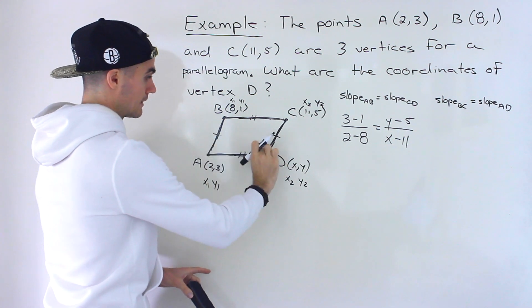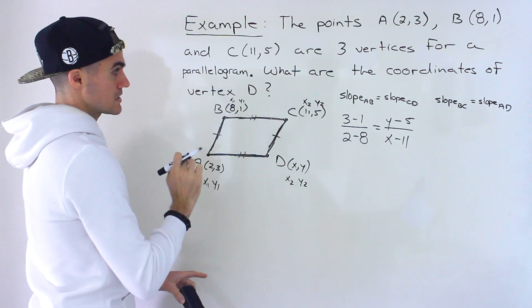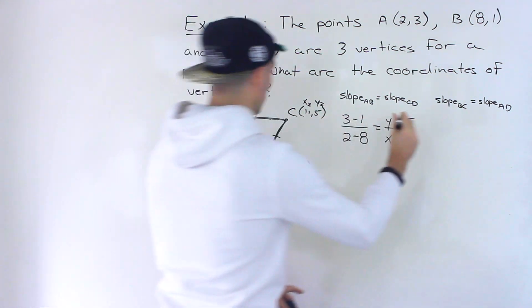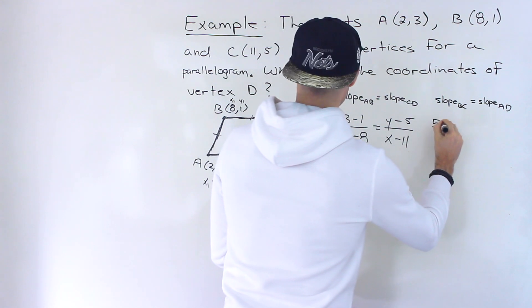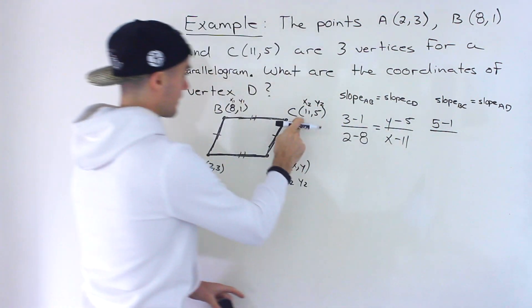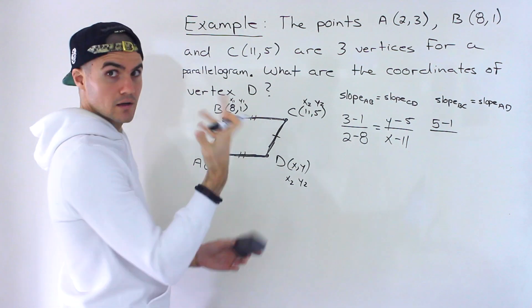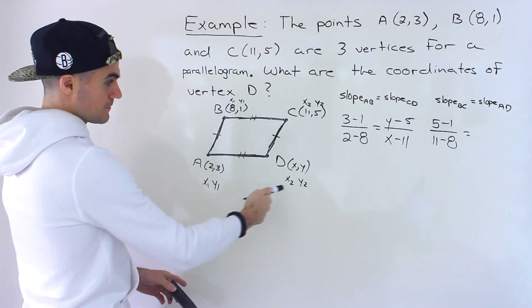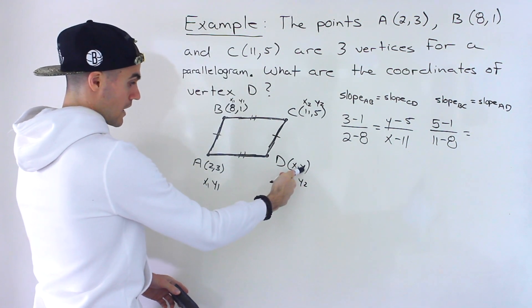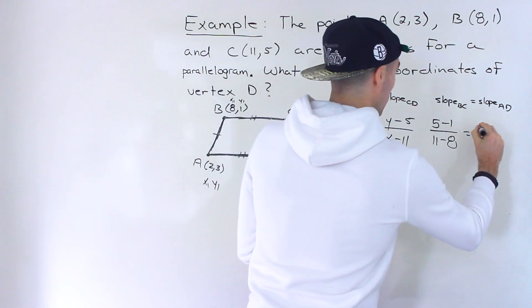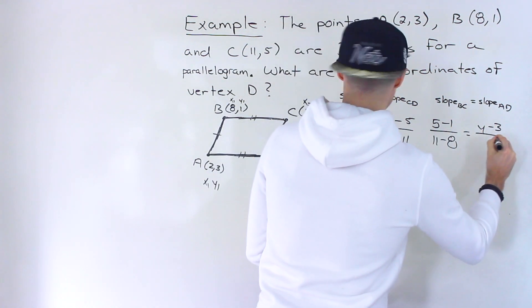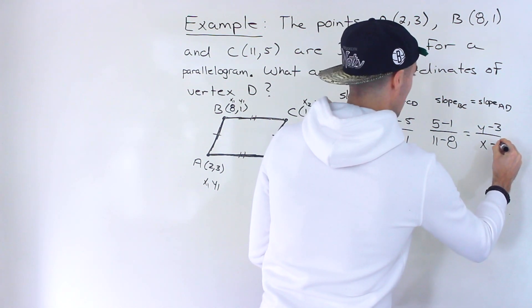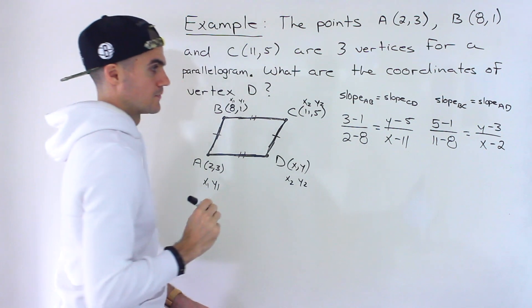All right, just relabeling these because now we're looking at line AD and BC. So what's the slope of BC going to be? Well, it's going to be Y2 minus Y1. So we're going to have 5 minus 1 over X2 minus X1, 11 minus 8. And then that's going to equal the slope of AD, which is Y2, which is the Y minus the Y1. So we'll have Y minus 3 over X2, which is X minus X1, which is 2 like that.